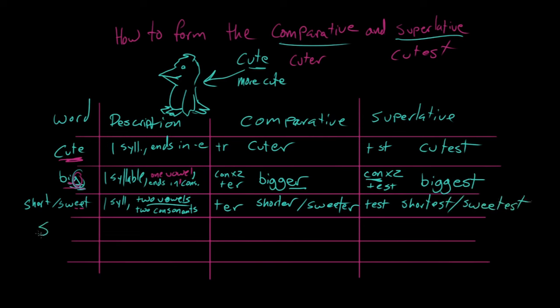And now we're getting into the weird stuff. So if you take a word like shiny, which is two syllables, and it ends in Y, then what you have to do is you change Y to an I, and you add ER. So shiny becomes shinier. See how this Y becomes an I here? Same thing for superlative. The Y becomes an I, and then you add EST. So shiniest.